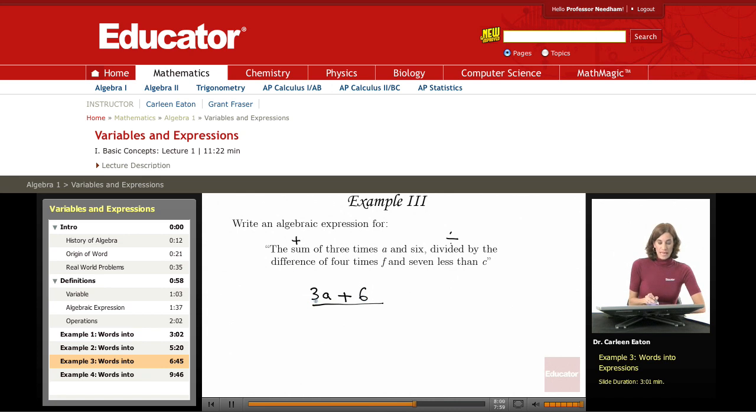So the sum of three a and six. I'm taking that entire expression and dividing it by the difference. Difference tells me to subtract. I'm subtracting two things: the difference of four times f and seven less than c.